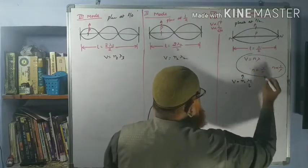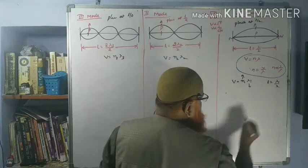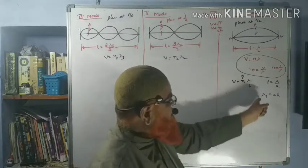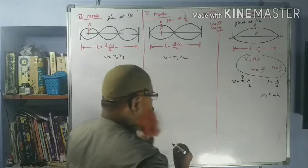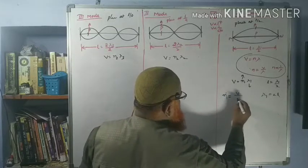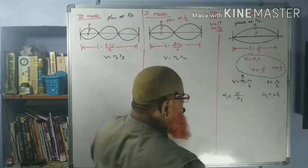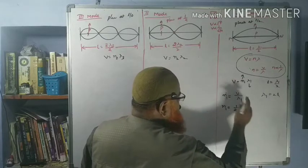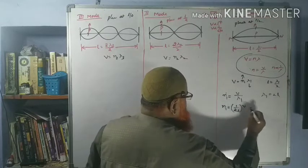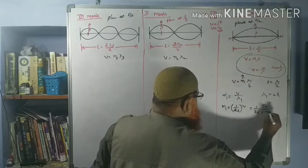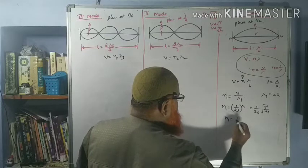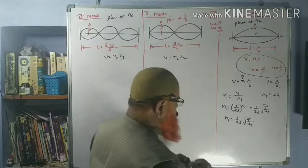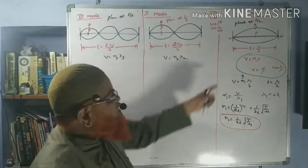In the first mode, the length of the string L equals λ1/2, so λ1 equals 2L. Therefore N1 equals V/λ1 equals V/(2L) equals (1/2L)·√(T/μ). This is the fundamental mode of vibration.